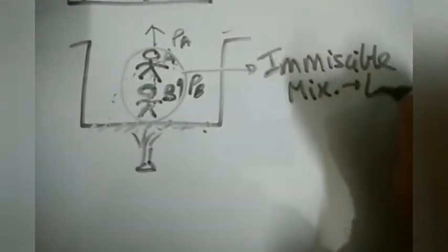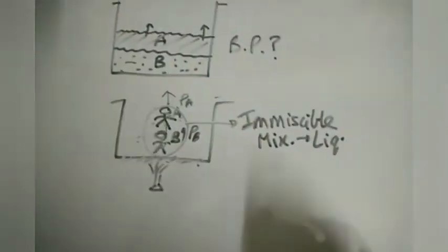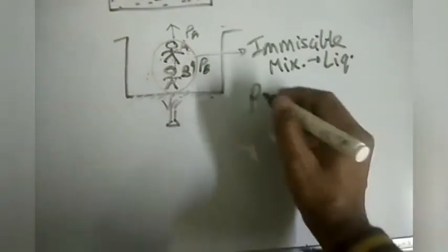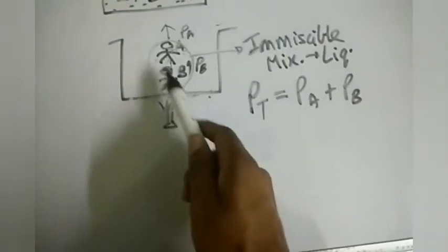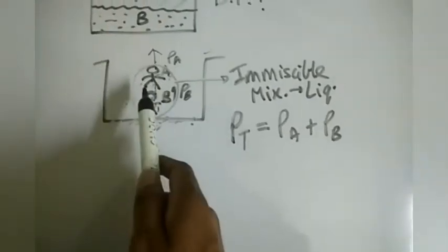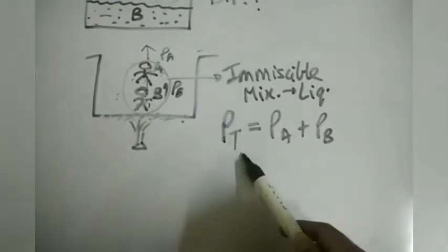So for an immiscible liquid mixture, the total pressure PT equals Pa plus Pb. This is because B exerts pressure wanting A to move out, and hence the total pressure is the sum of both individual vapor pressures.